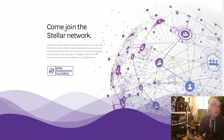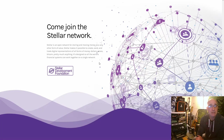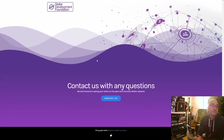Stellar is an open network for storing and moving money, plus any other form of value. Stellar makes it possible to create, send, and trade digital representations of all forms of money — dollars, pesos, Bitcoin, pretty much anything. It's designed so that all the world's financial systems can work together on a single network. Let's go ahead and get started.